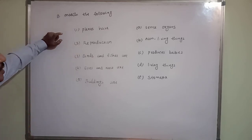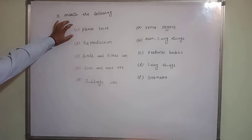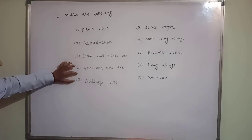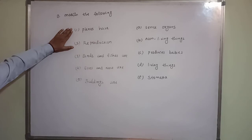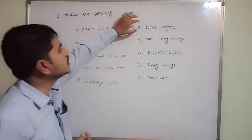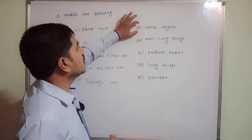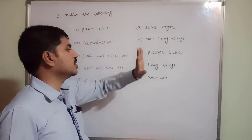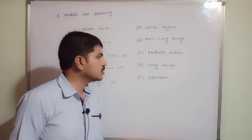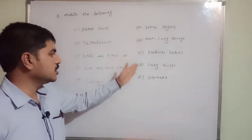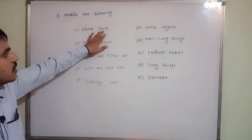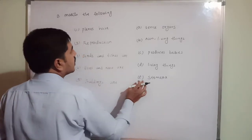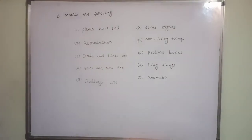Now match the following. The five items given are: plants have, reproduction, birds and fishes are, eyes and nose are, and buildings are. The answers on the right side are: A - sense organs, B - non-living things, C - produces babies, D - living things, E - stomata. Plants have stomata - stomata is a special category for plants only, so E is the correct answer. Reproduction means producing a baby, so C is the answer for that.